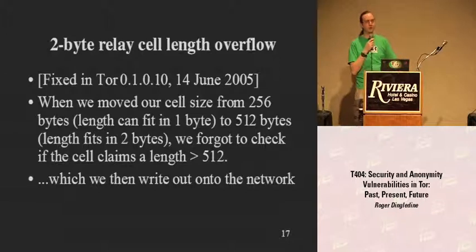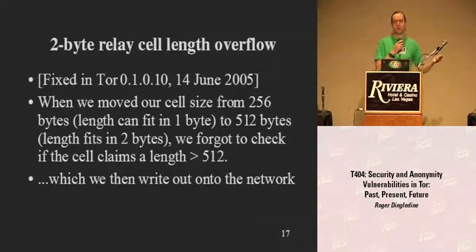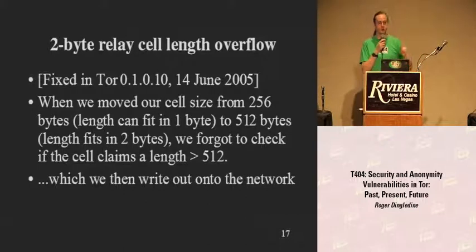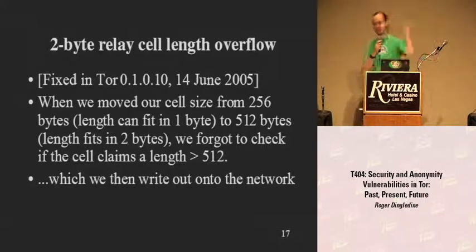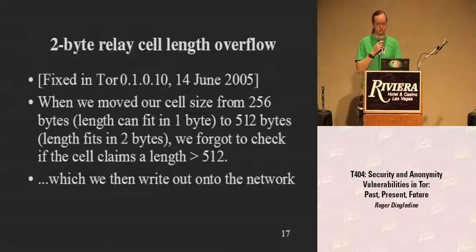The exit relays were writing cells out to the network at whatever length you specified. So a cell shows up saying it has a 45,000-byte payload, and the exit relay says okay, I'll write 45,000 bytes of memory starting here onto the network. Who knows what's in that memory, but it got written out. That was kind of bad — we noticed it and solved it pretty quietly.